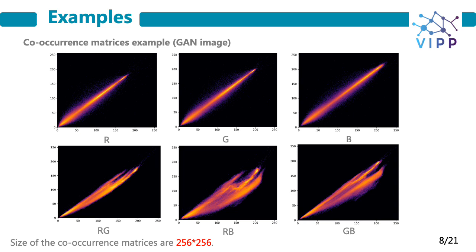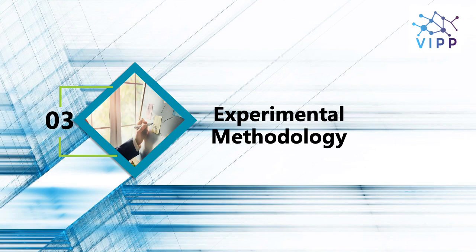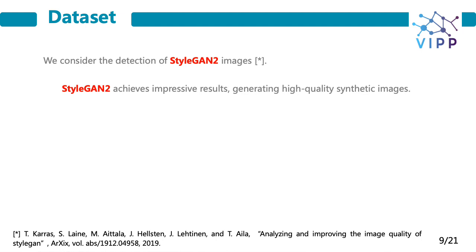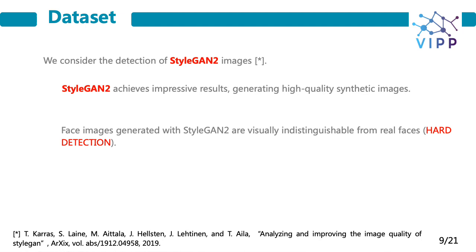This slide shows one example of a GAN image with co-occurrence matrices on R, G, and B, and also across the channels RG, RB, and GB. We consider the detection of StyleGAN version 2, which has been recently proposed as an improvement of the original StyleGAN architecture, achieving impressive results and being capable of generating sensitive images of extremely high quality. Differently from earlier architectures, face images generated with StyleGAN version 2 are visually indistinguishable from real ones, making their detection particularly hard.